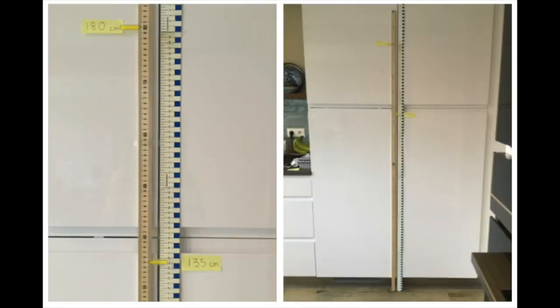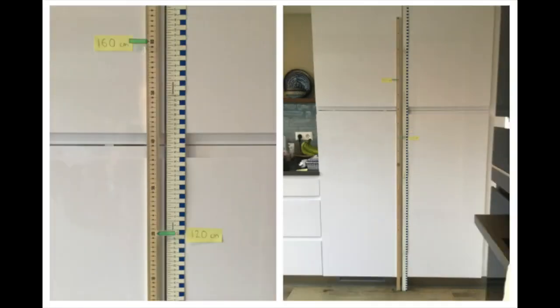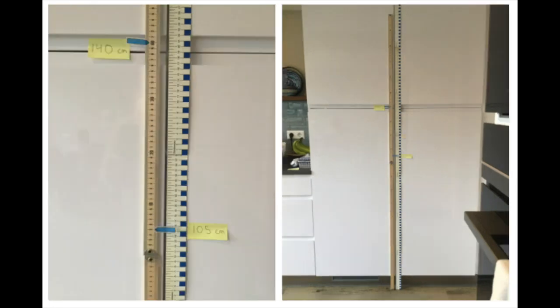The yellow arrow shows the second drop from 180 centimeters high, and the ball bounced up 135 centimeters. The green arrows show the ball being dropped from 160 centimeters high, and the ball bounced up 120 centimeters high. And the blue arrows show the ball was released from 140 centimeters high, and bounced all the way up 105 centimeters high.